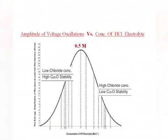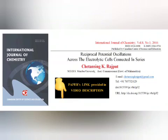This phenomenon of potential oscillations between these coupled cells can be observed with any chloride electrolyte. Interestingly, the amplitude of such oscillations is found to be dependent upon the concentration of the chloride ions in the electrolyte. The voltage oscillations of maximum amplitude are observed at the chloride concentration of 0.5 moles per liter.